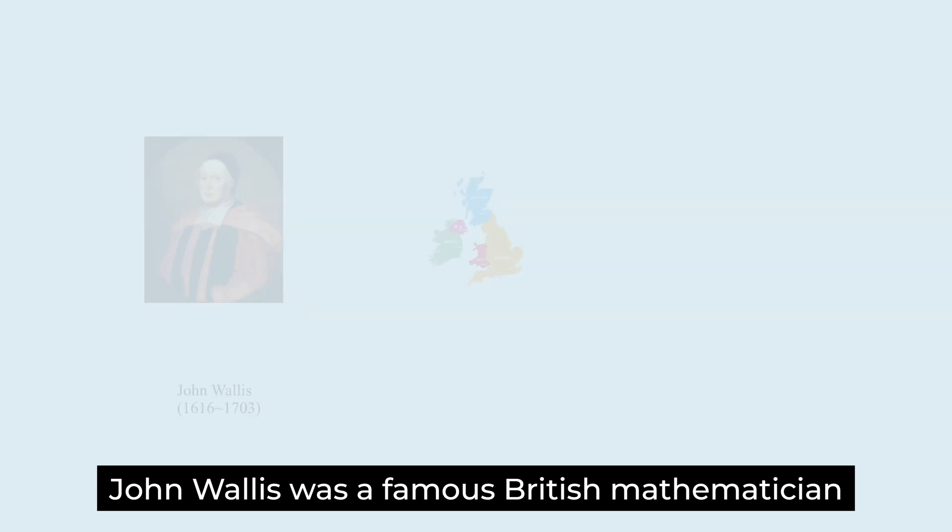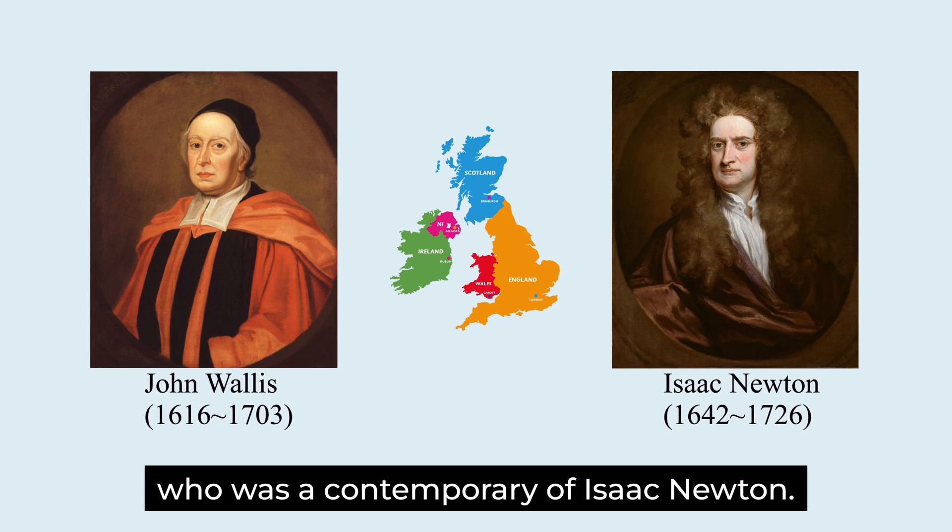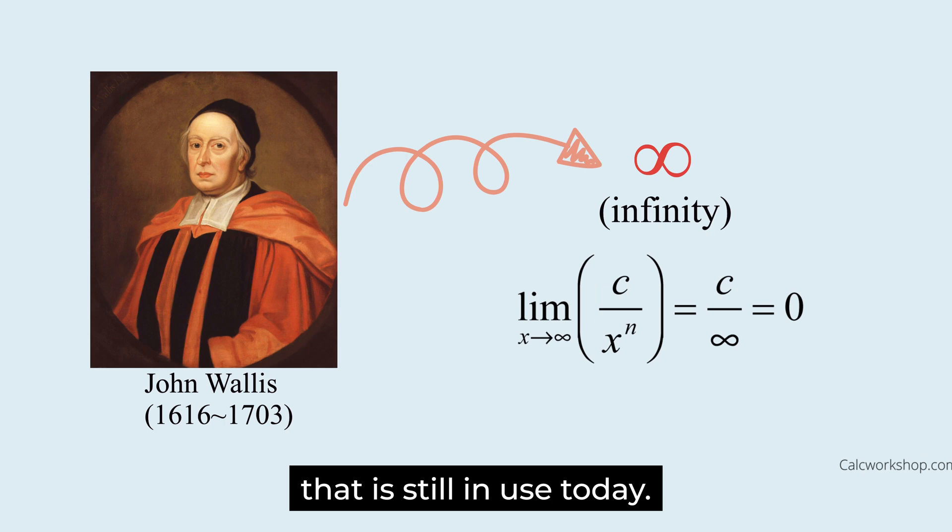John Wallis was a famous British mathematician who was a contemporary of Isaac Newton. He came up with this symbol for infinity that is still in use today.